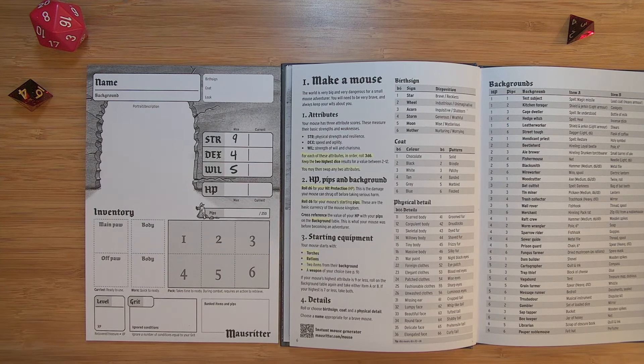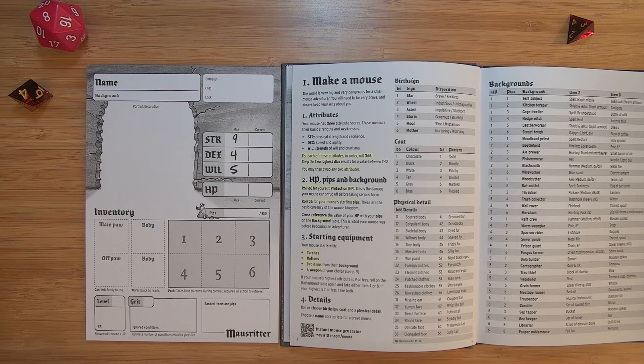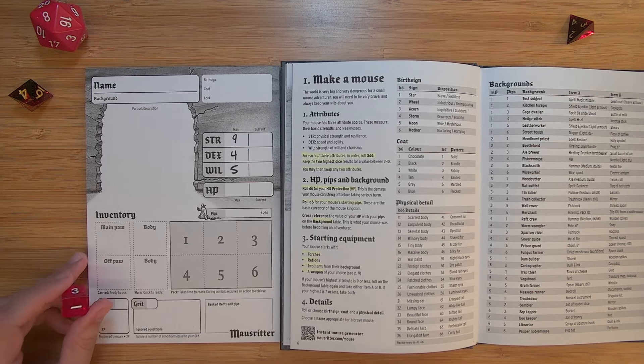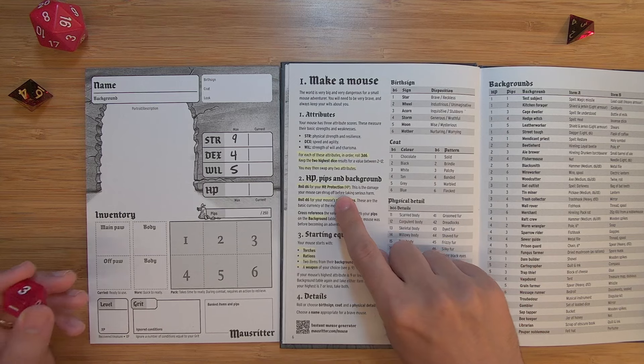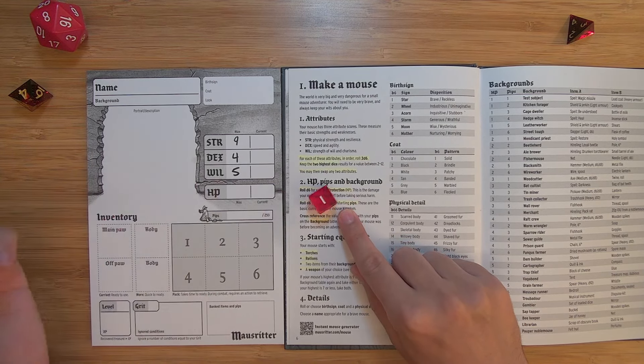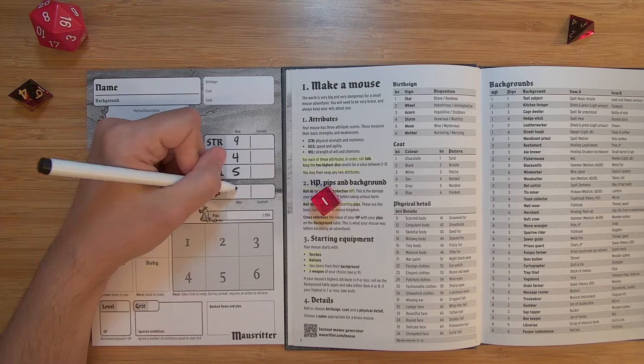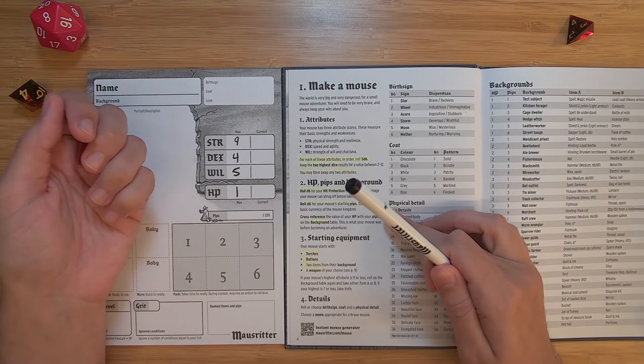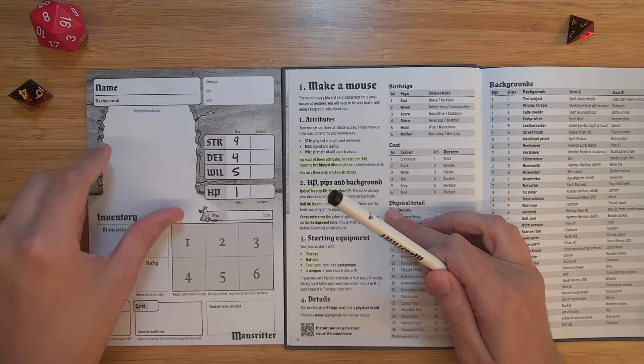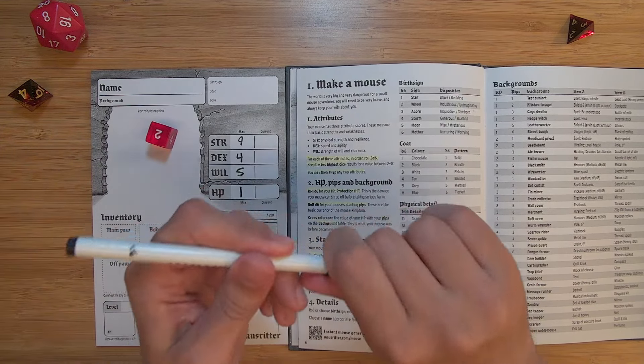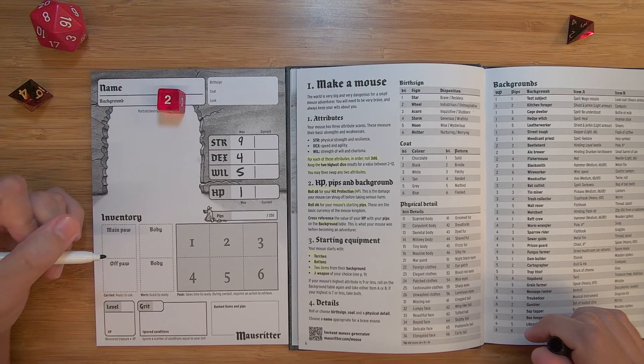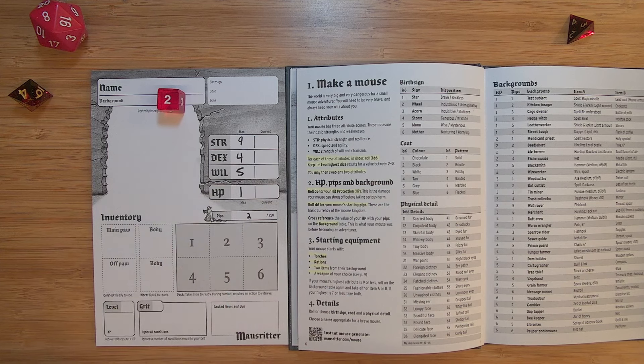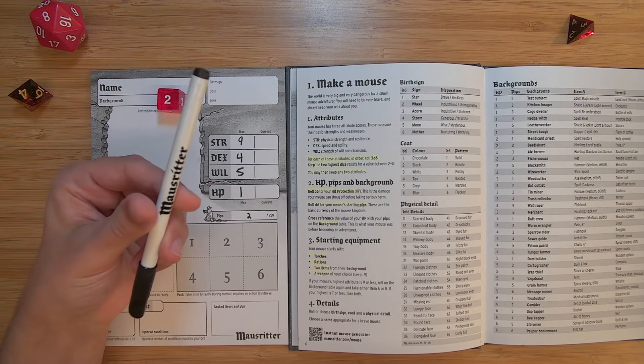For hit points, pips and background. Roll d6 for your hit. So HP is not hit points. It's hit protection. So you're not actually taking damage. But this is sort of how well you can protect yourself, whether you're burly or whether you're faster or whatever. So you're going to roll just 1d6 for your HP. 1. Okay. I don't love that. But hey, easy come, easy go. We've got 1 for our HP. And then we're going to roll 1d6 for your mouse's starting pips. This is the basic currency of the mouse kingdom. And I love that it's not gold and silver. It's pips. It just sounds so much cuter. 2. All right. He is a weak and relatively poor little mousey dude.